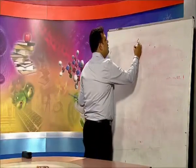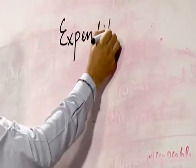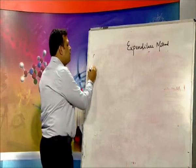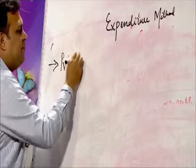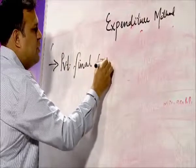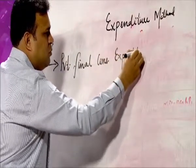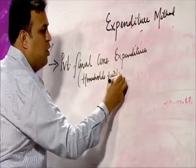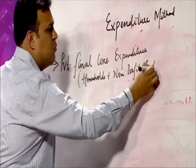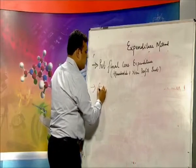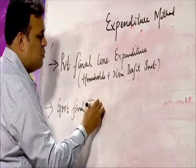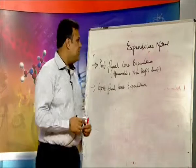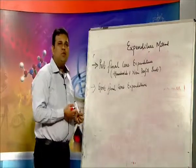In the expenditure method, we have private final consumption expenditure — the expenditure of households plus non-profit institutions. Then, government final consumption expenditure. Government purchases cement, raw material, and everything. So government is both a producer and a consumer.